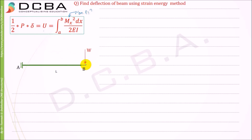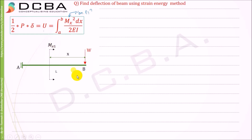For example, if I take a section at x, the equation I get — call it Mx1 — will apply for the entire beam, right from B to A, that is from x equal to 0 till x equal to L. Whatever equation I get for that section, that is the Mx to substitute into the formula to get the entire strain energy.